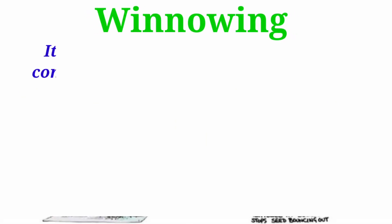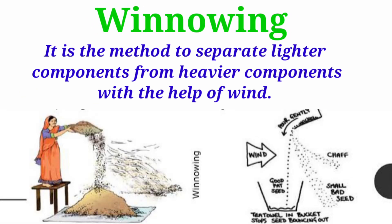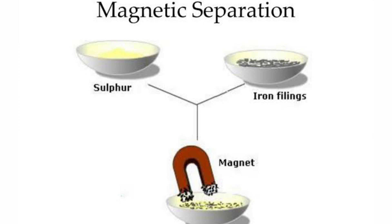Winnowing is the method used to separate lighter components from heavier components with the help of wind. It is used to separate grains from husk. The simplest way is to stand at a higher level and allow the mixture to fall to the ground; the wind blows away the light components while the heavier grains fall down to form a heap. In the manual method of winnowing, the farmer drops the mixture of wheat and husk from a height.